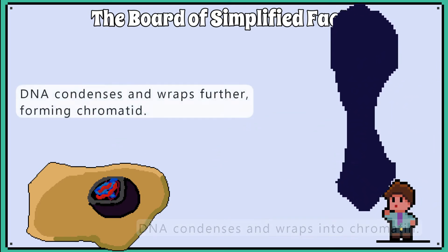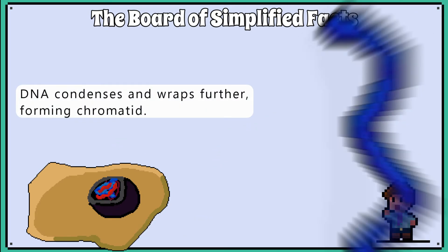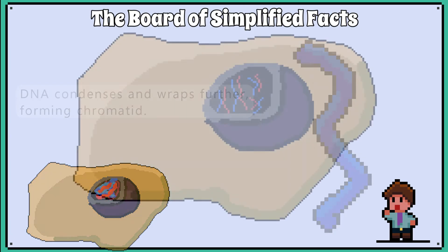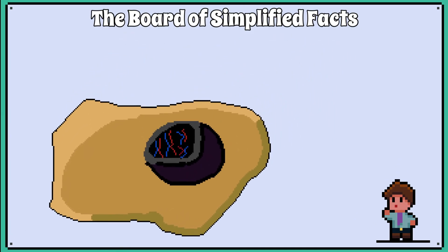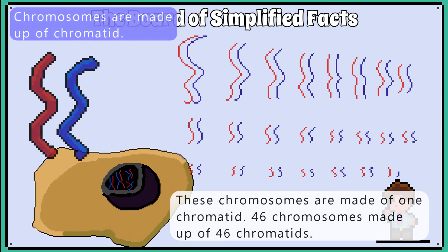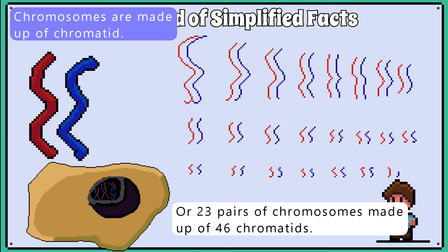The chromatin continues to condense and arranges itself into a chromatid. Now, the 23 pairs of chromosomes are visible in the traditional sense, but notice that these chromosomes are made up of one chromatid. So we have 46 chromosomes made up of 46 chromatids, or 23 pairs of chromosomes made up of 46 chromatids.